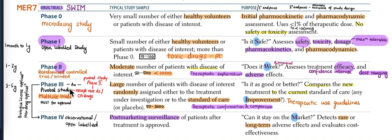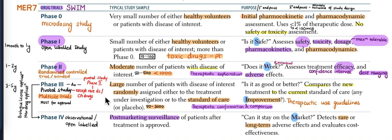Phase 3 involves multi-site trials and is a must for approval. A large number of patients — 1000 to 3000 — is considered, and the study is randomized. The most important terminology here is therapeutic confirmation and comparison. All therapeutic guidelines are determined in Phase 3.